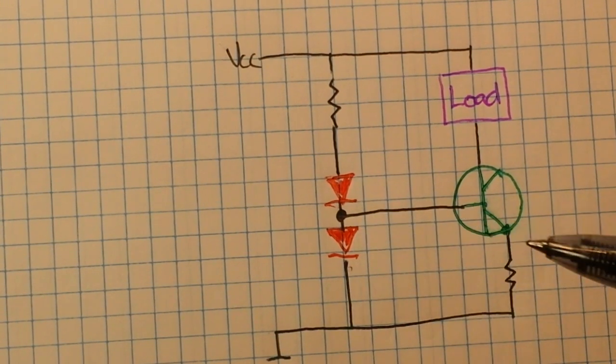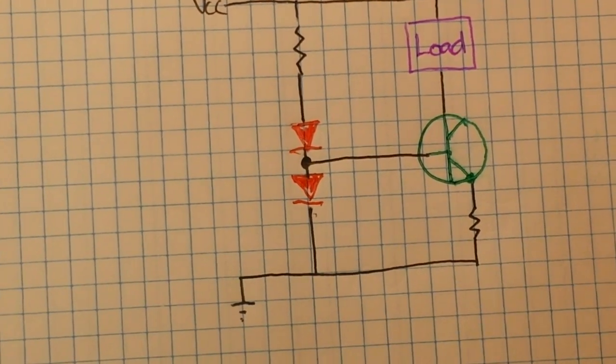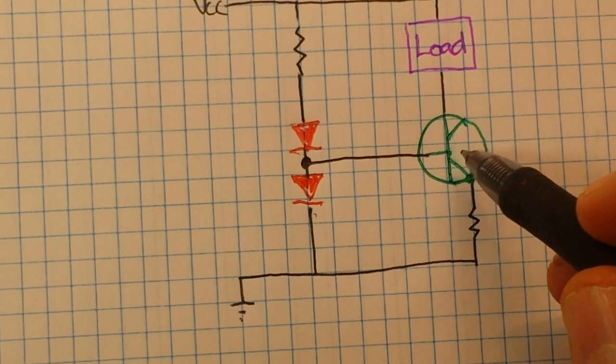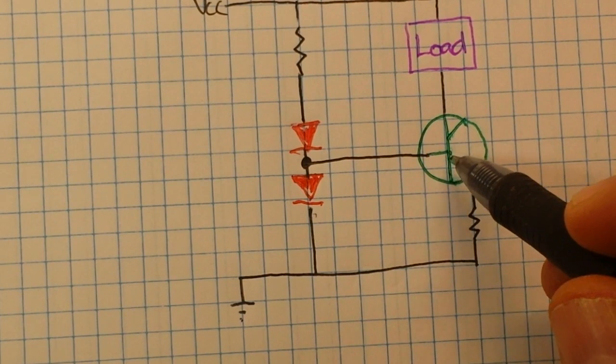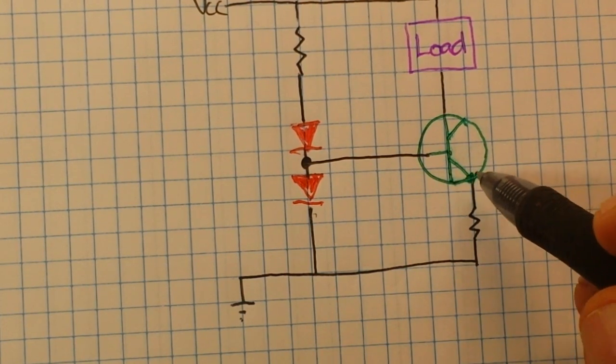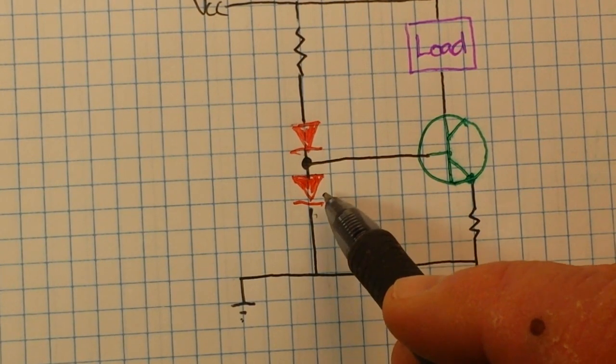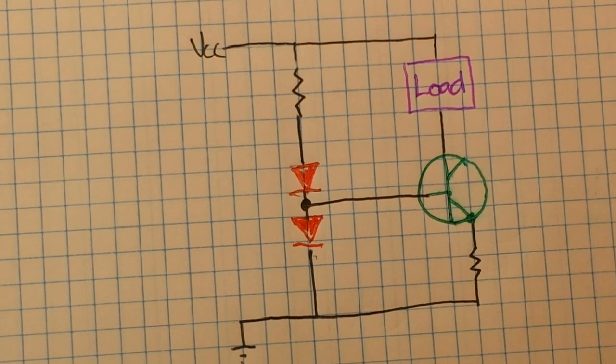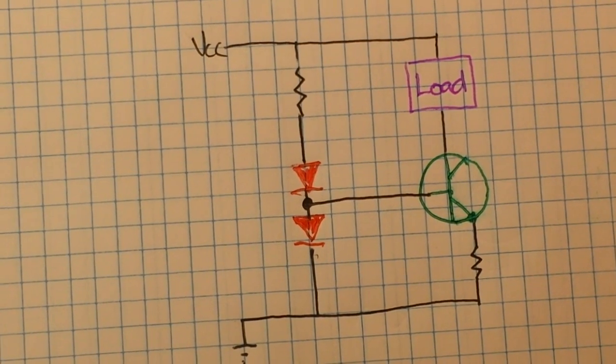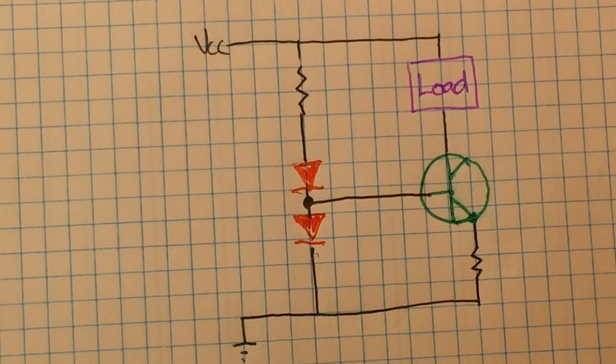Well then we know something. We know that this voltage right here is going to be 0.6 volts - that's the voltage drop. And if we use standard silicon diodes, we can make another voltage drop of 0.6 there, so that regardless of the voltage, the current will remain the same.